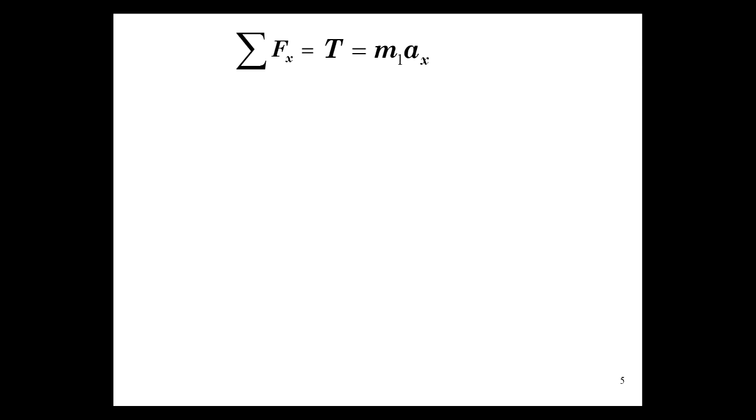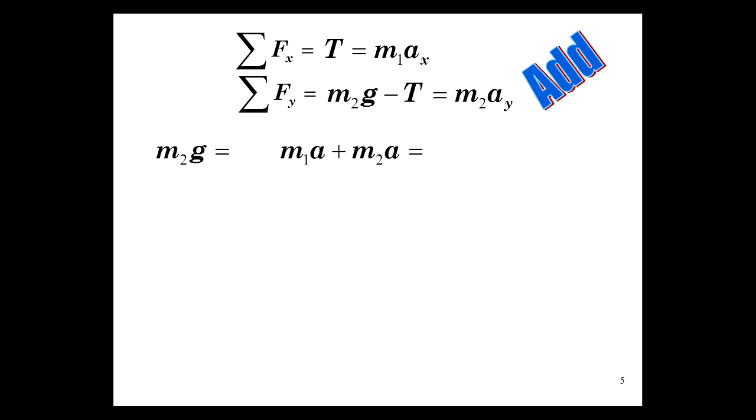Sum of Fx is tension equals m1a. Sum of Fy, m2g minus t equals m2a. Let's add these. So we add them, then on the left-hand side the t's go away. We have m2g equals m1a plus m2a.